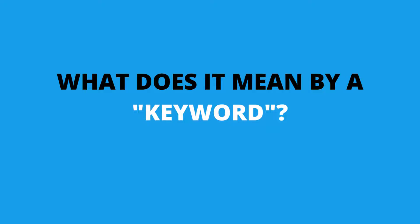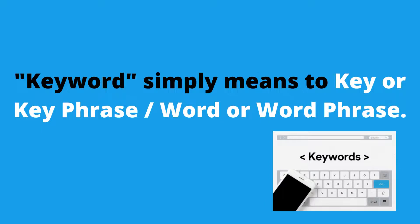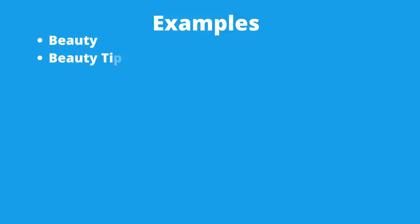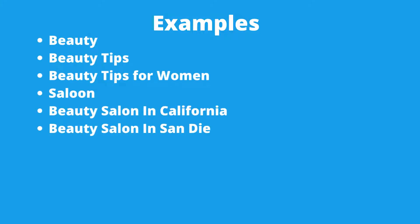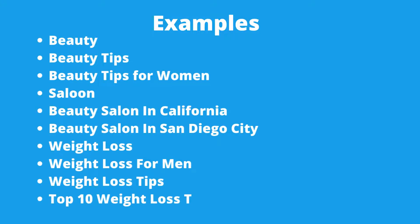What does it mean by a keyword? A keyword simply means a key phrase or word phrase. Examples: beauty, beauty tips, beauty tips for women, saloon, beauty saloon in California, beauty saloon in San Diego City, weight loss, weight loss for men, weight loss tips, top 10 weight loss tips for healthy life. Any of these can be taken as a keyword.